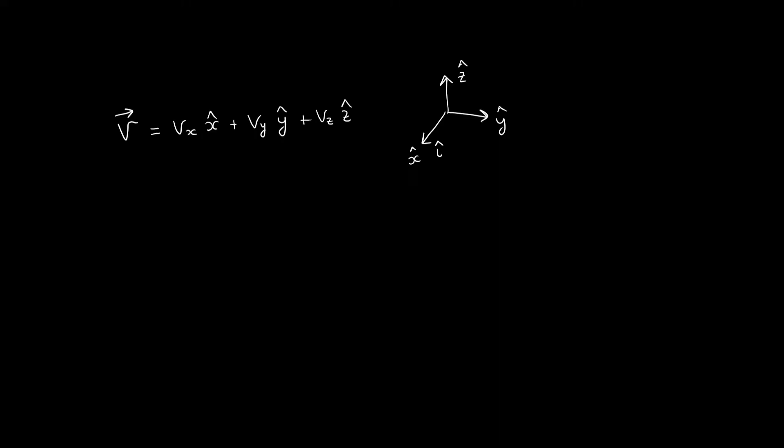Some people use the letters i, j and k. If we specify the bases being used we can just write down the vector as a collection of its three components, like this.